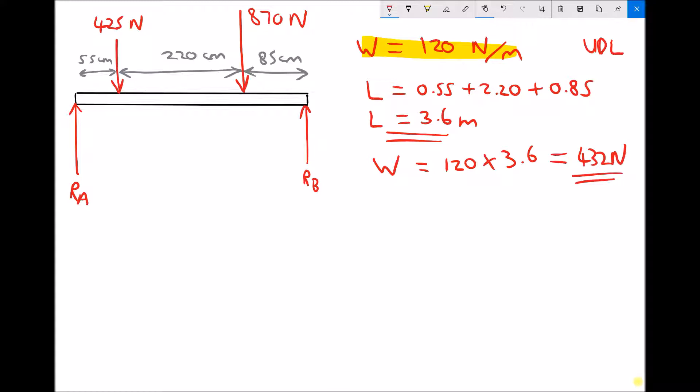Now what we need to do is represent that as a point load on our diagram. So let's just change colors. We've got a weight of 432 newtons. Now as you're probably aware, the weight of an object acts in the center. So this 432 newtons is going to act in the center of the beam. And we can add on the distance from the pivot, this distance here, which is going to be half of the length, or 1.8 meters.